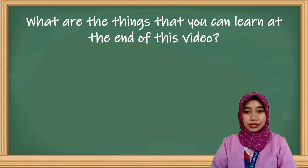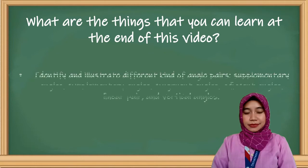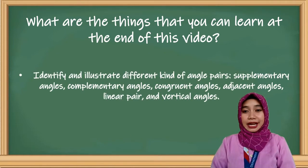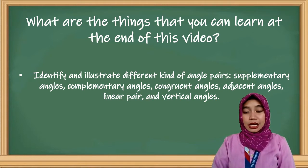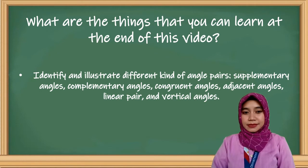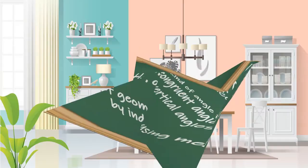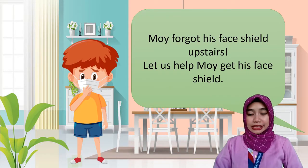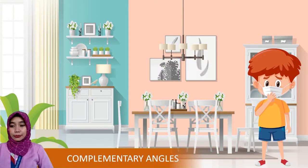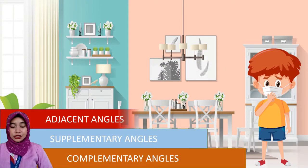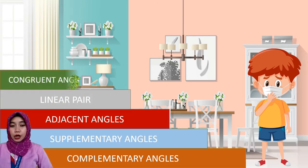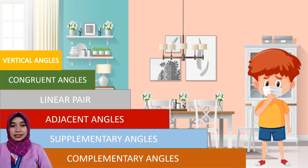What are the things that you can learn at the end of this video? You will identify and illustrate different kinds of angle pairs, which are supplementary angles, complementary angles, congruent angles, adjacent angles, linear pair, and vertical angles. And you will derive relationships of geometric figures using measurements and by inductive reasoning. We need to complete all the steps from complementary angles, supplementary angles, adjacent angles, linear pair, congruent angles, vertical angles, and more.